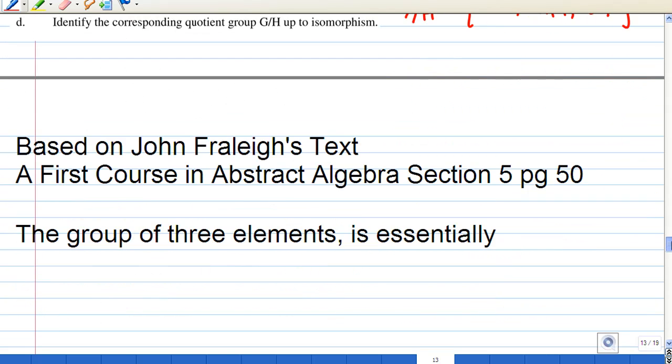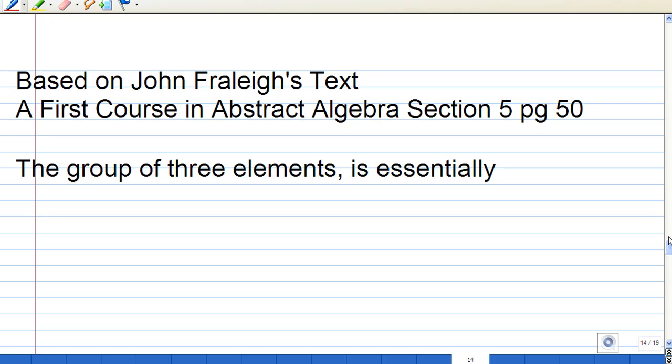Now, we know that based on John Fraleigh's text again on page 50, section 5, the group of three elements is essentially the cyclic group of order three, or Z3, Z3 addition modulo three, which means this is a group consisting of 0, 1, 2 with addition modulo three, or a cyclic group of order three.